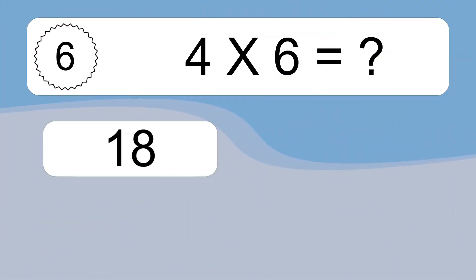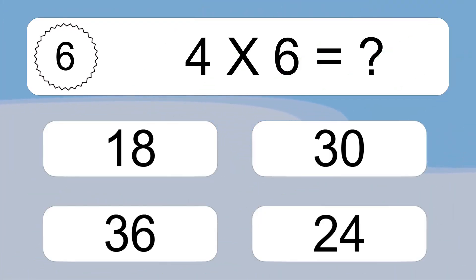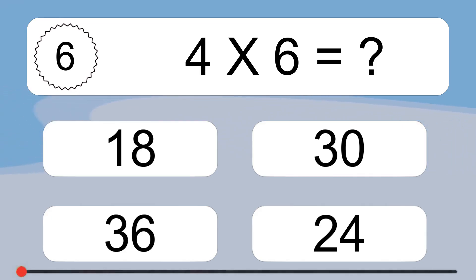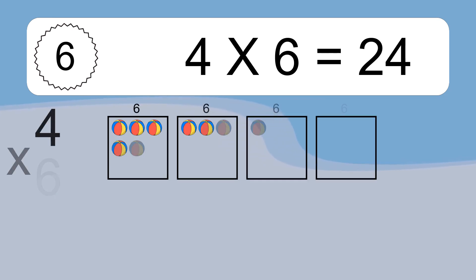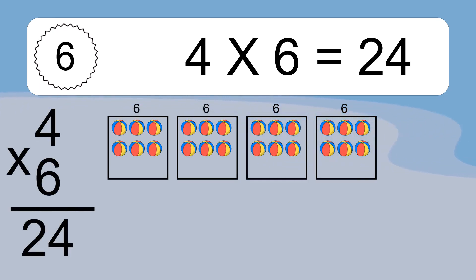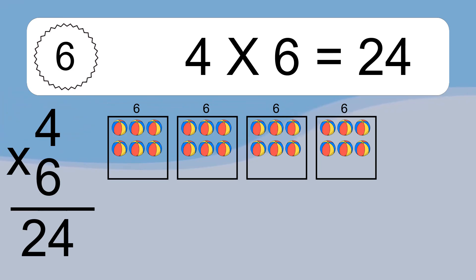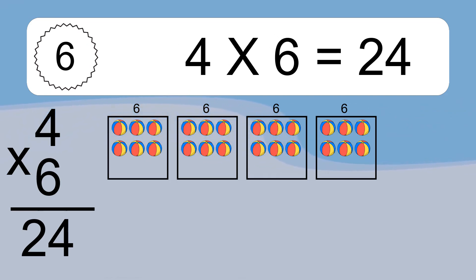4 times 6 equals what? 4 times 6 equals 24. We have 4 boxes, and each box has 6 colorful balls inside. If you count all the balls in all the boxes together, you will have 4 times 6 balls. This equals 24 balls.